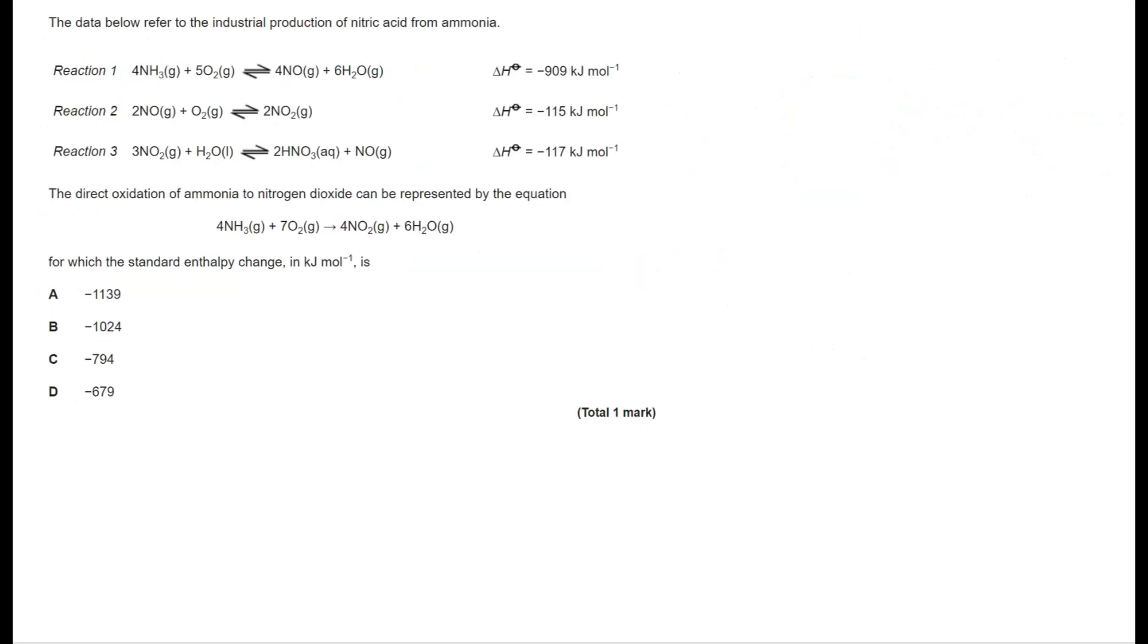Next question. And there's quite a lot to think about here. The direct oxidation of ammonia to nitrogen dioxide can be represented by the overall equation we see. But it can be broken down into stages. Now it's important to note that this is a combination of reaction one and reaction two. Now if I want to combine them you'll notice I'm making 4NO in reaction one. Reaction two starts with 2NO. So if I'm going to combine these two equations into one overall equation I'm going to double reaction two.